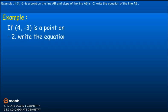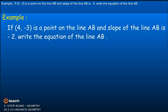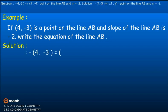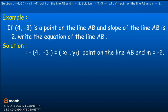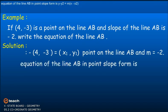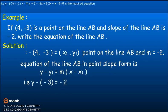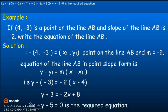Example: If (4, -3) is a point on line AB and the slope of line AB is -2, write the equation of line AB. Solution: Here (X1, Y1) = (4, -3) and M = -2. Using the point-slope form Y - Y1 = M(X - X1), we get Y - (-3) = -2(X - 4), so Y + 3 = -2X + 8. Therefore, 2X + Y - 5 = 0 is the required equation.